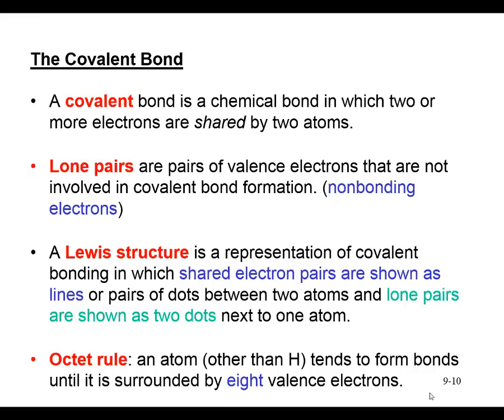Elements in the second and third period will tend to have eight valence electrons shown around them in Lewis structures. These valence electrons may be present either in covalent bonds shown as lines — with two electrons for every line — or as lone pairs shown as dots, which are the non-bonding pairs not represented as lines.